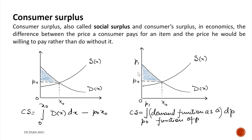If you see this figure, the consumer is willing to pay a certain amount, but because of market forces is only paying p0·x0. So the difference between these two is noted by the shaded area, known as consumer surplus.